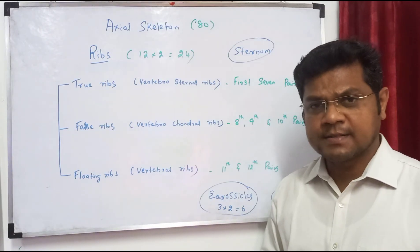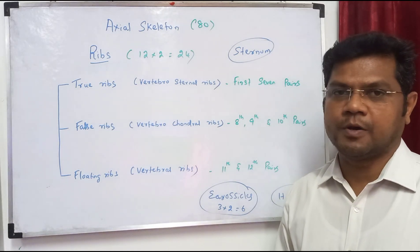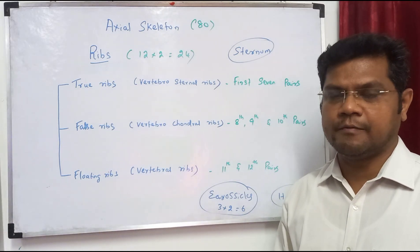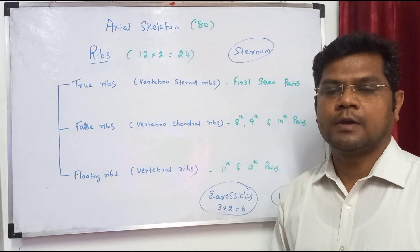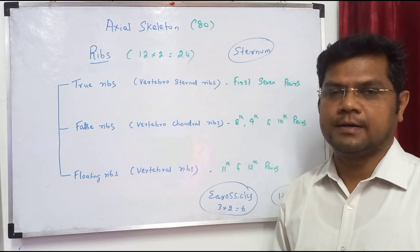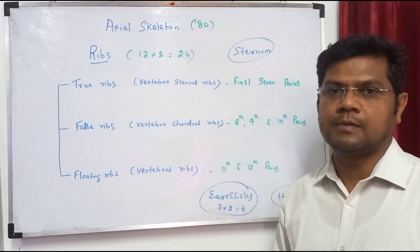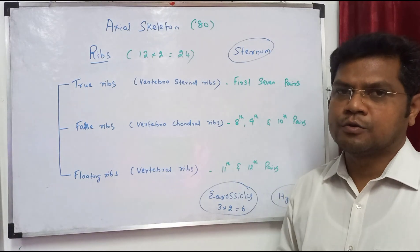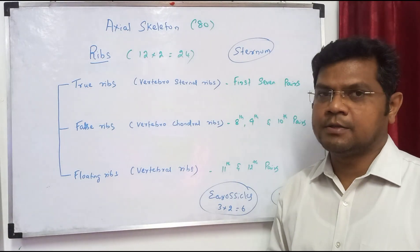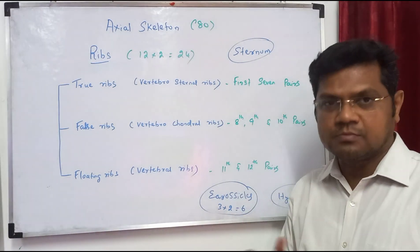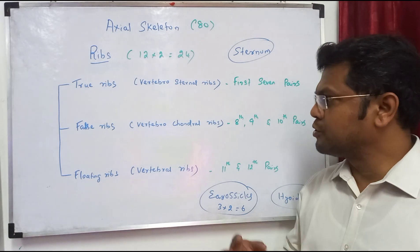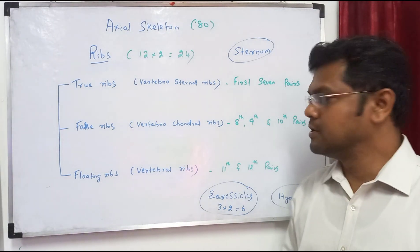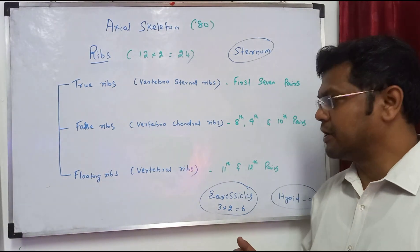Next in the axial skeleton are ribs. We already know there are 12 pairs of ribs. Ribs are also included in the axial skeleton along with the skull, vertebral column, and hyoid bone. The 12 pairs are divided into true ribs, false ribs, and floating ribs.